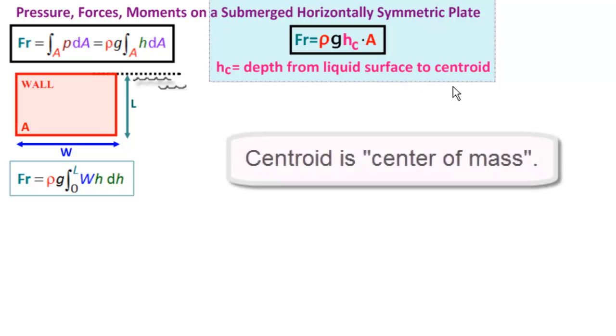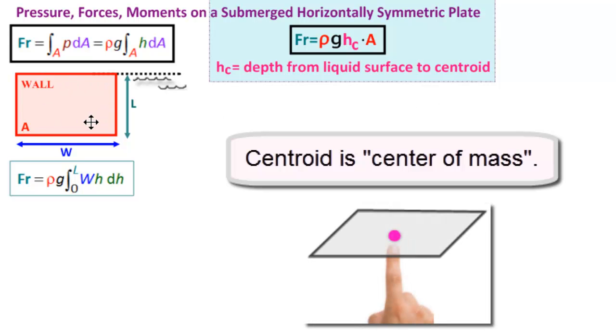Well, the centroid is the place where if you were to cut this out of cardboard and put it on the top of your finger, it's the point where the cardboard would balance on your finger without falling off.